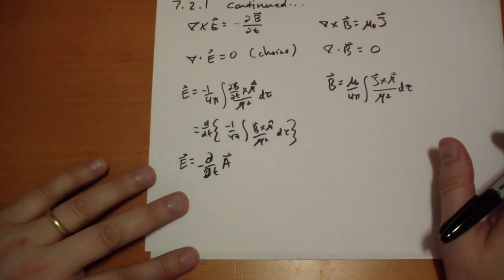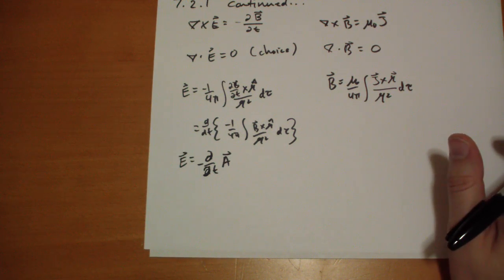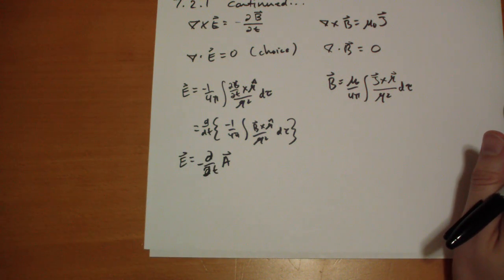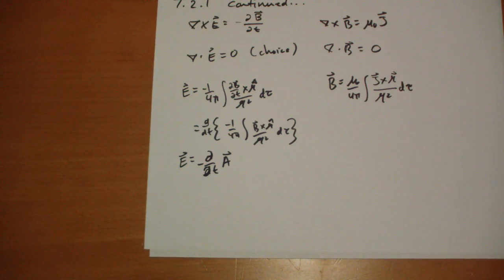And a quick check: the curl of A should give you back B. So the time derivative of the curl of A should give you back the time derivative of B. And indeed, everything works out, and the curl of E ends up being back to what this was.